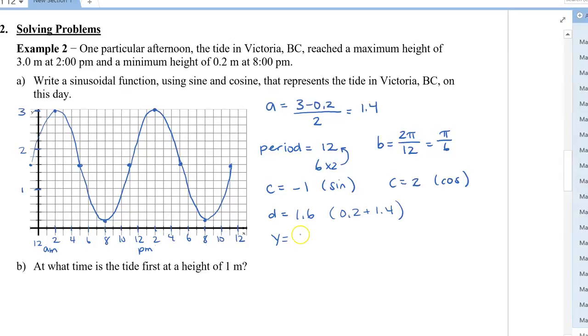My two equations are y equals 1.4 sine pi over 6 x. My phase shift is negative 1 backwards so it's going to be plus 1, close my bracket, and then plus 1.6 for my vertical displacement. And the cos one will be very similar, except my phase shift will be x minus 2 because it's moving to the right of what it normally is.